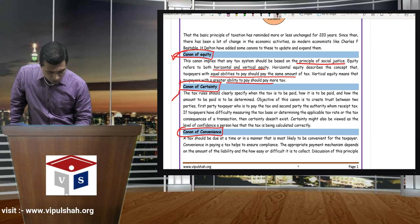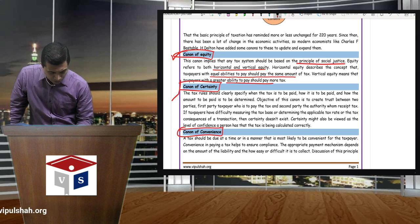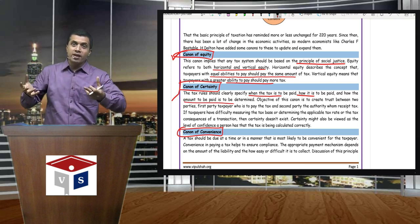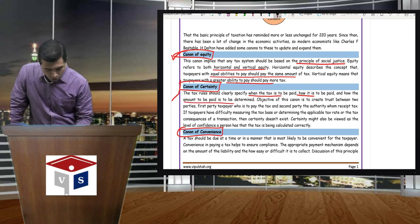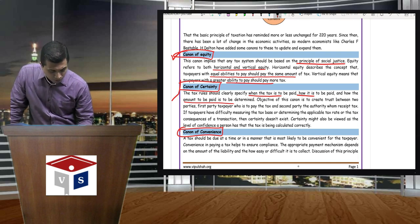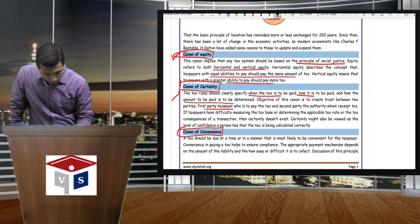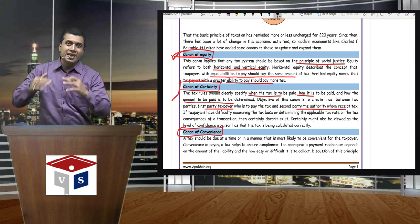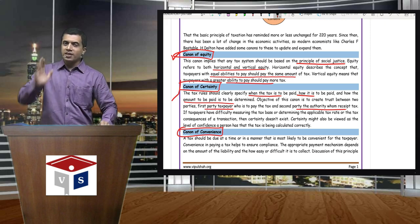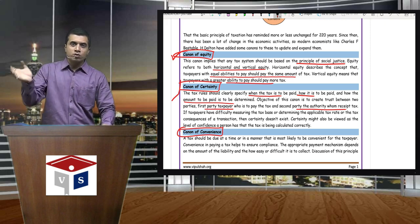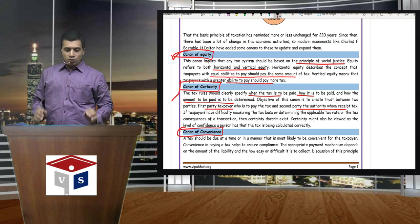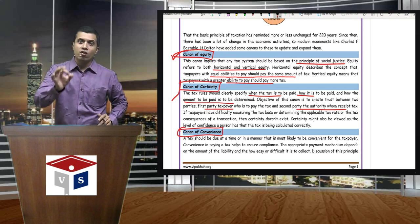The tax rules should be clearly specified: when tax is to be paid, how it is to be paid, and how the amount is to be determined. When to pay and how much to pay must all be clear. The object of this Canon is to create trust between two parties — the first party is the taxpayer, and the second party is the authority who receives the tax. This is the Canon of Certainty.